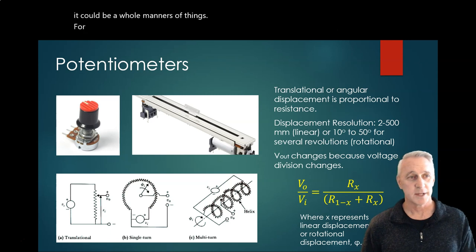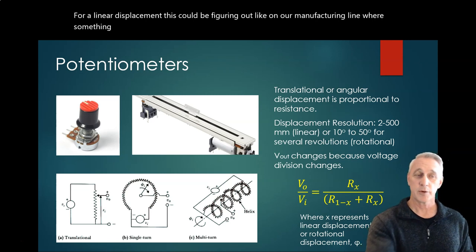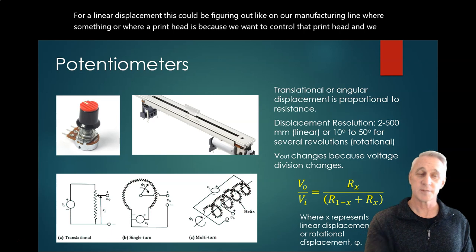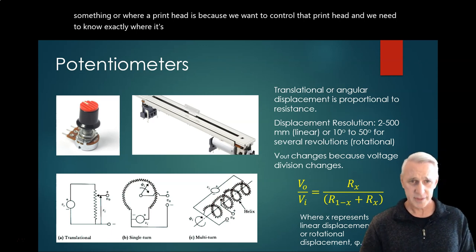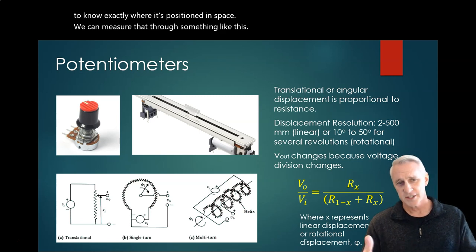For a linear displacement, this could be figuring out on our manufacturing line where something is, or where a print head is, because we want to control that print head and we need to know exactly where it's positioned in space. We can measure that through something like this. And so these are different types of designs.